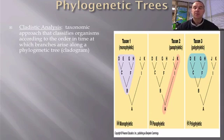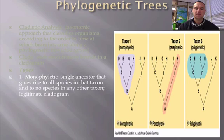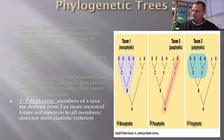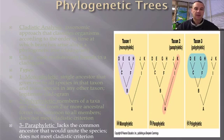When we look at phylogenetic trees, we use cladistic analysis or a cladogram. It shows the branching of different organisms, and each branch is called a clade. There are three types: monophyletic, meaning one single ancestor from which many diverged; polyphyletic, where multiple separate ancestors each diverge into species; and paraphyletic, which lacks a common ancestor and appears as a straight line.